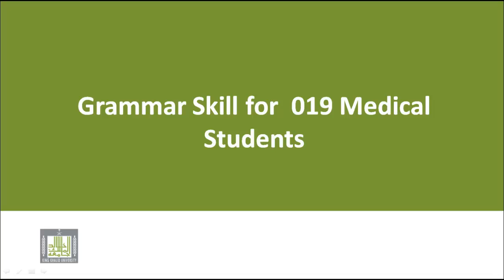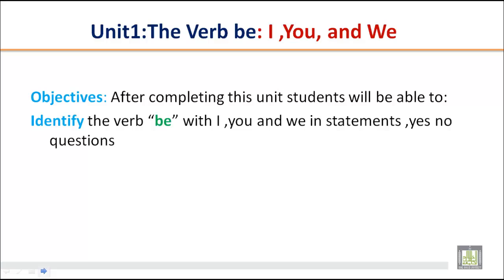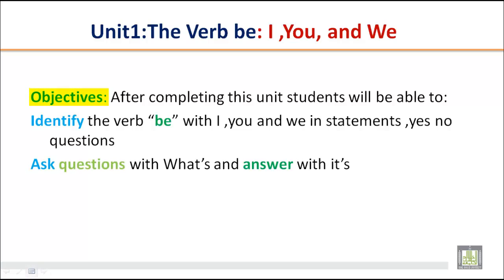Bismillahirrahmanirrahim. Grammar Skill for 019 Medical Students, Unit 1: The Verb Be — I, You, and We. Dear students, in this unit we will study about the form of verb be in simple present. Let's look at the objectives of this unit. After completing this unit, you will be able to identify the verb be with I, you, and we in statements, yes/no questions, and ask questions with 'what' and answer with 'it's'.